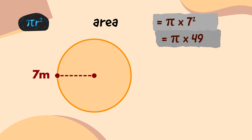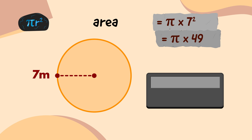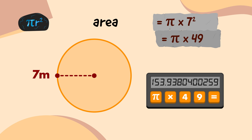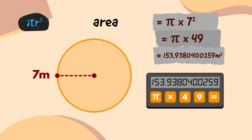Now, I need to multiply 49 by pi. So on my calculator, I'll press the pi button, press the multiply button, type 49, and press the equals button, which gives me 153.9380400259.